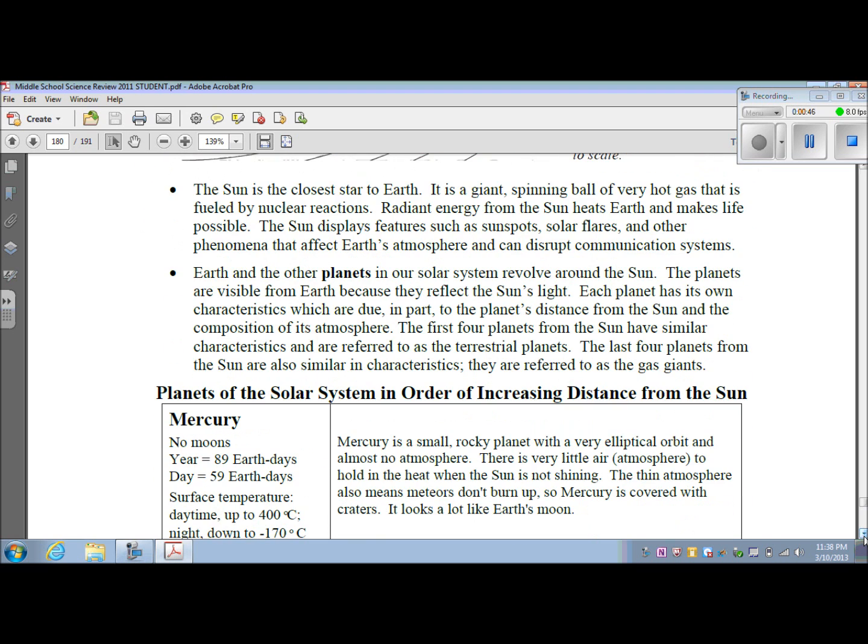The Sun is the closest star to Earth. It is a giant spinning ball of very hot gas that is fueled by nuclear reactions. Radiant energy from the Sun heats Earth and makes life possible. The Sun displays features such as sunspots, solar flares, and other phenomena that affect Earth's atmosphere and can disrupt communication systems.